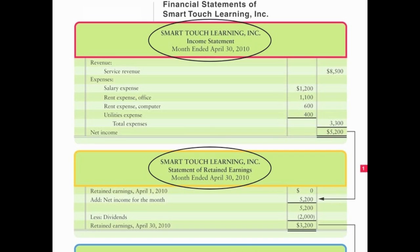Notice how these two statements are related. We calculated net income of $5,200 in the income statement, and retained earnings is affected by net income — you can see this in the statement of retained earnings. We take net income from the income statement and bring it down here, add it to beginning retained earnings, then subtract dividends. Remember, dividends is not an expense — that's why it does not appear on the income statement. Dividends is a payment to owners for their investment that reduces retained earnings. Once you subtract dividends, you're left with ending retained earnings, in this case $3,200.